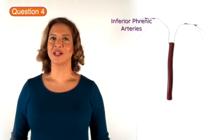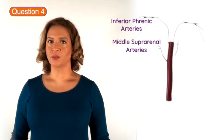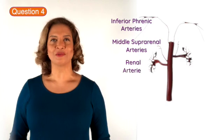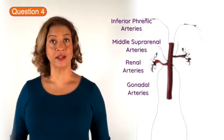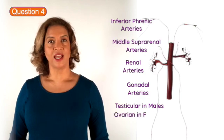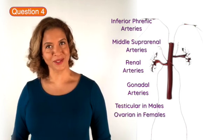Question 4. The four paired lateral arteries of the abdominal aorta are the inferior phrenic arteries, the middle suprarenal or adrenal arteries, the renal arteries, and the gonadal arteries — which are the testicular arteries in males and the ovarian arteries in females.